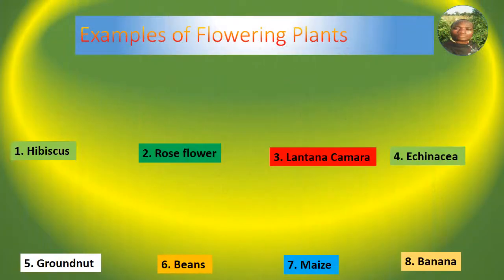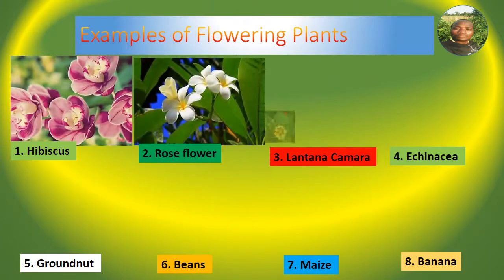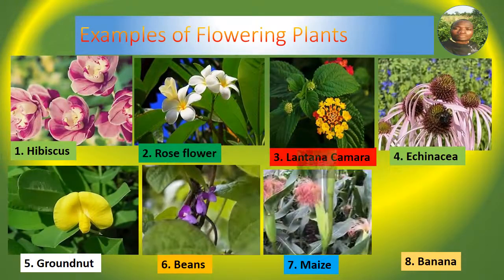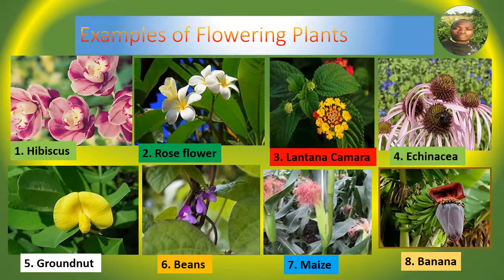Examples of flowering plants: 1. Hibiscus 2. Rose flower 3. Plantain 4. Echinacea 5. Groundnut 6. Beans 7. Maize 8. Banana. Also we have pawpaw, orange, and many others.